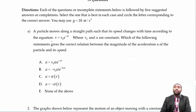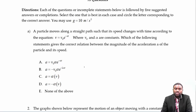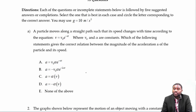Question one goes as follows. A particle moves along a straight path such that its speed changes with time according to the equation v equals v-naught e raised to the power negative alpha t, where v-naught and alpha are constants. Which of the following statements gives the correct relation between the magnitude of the acceleration a of the particle and its speed?